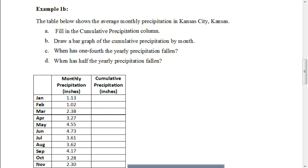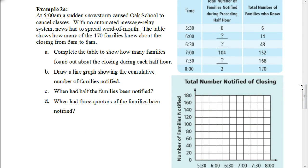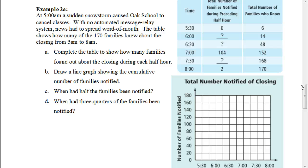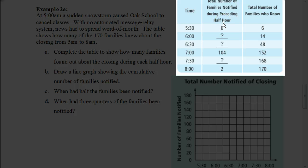We're actually going to skip this next example, and we're going to go down here to the second example, example 2A. Because in the previous example, we were looking at a bar graph. And there's going to be times where maybe a line graph would be a better kind of graph to use. And situations like that would be graphs involving time, because time is continuous. And so it would be a great opportunity to use a line graph. And there'll be reasons why when we get to analyze the information. The first thing we need to do is we need to complete this table. This is dealing with, at 5 a.m., a sudden snowstorm caused Oak School to cancel classes. With no automated message relay system, news had to spread word of mouth. The table shows how many of the 170 families knew about the closing from 5 a.m. to 8 a.m.